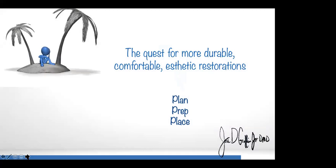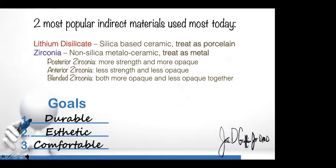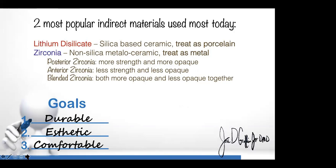The quest for more durable, comfortable, aesthetic restorations: plan, prep, place. The two most popular indirect materials today are lithium disilicate and zirconia. What we're looking for is durable, aesthetic, and comfortable restorations. Lithium disilicate — you're going to treat as porcelain. It's silica-based; you can etch it with hydrofluoric acid and silanate it. Zirconia — you're going to treat it as a metal. Whatever you would do for metal is what you can do for zirconia. There are three main classes of zirconia: regular old posterior zirconia — the opaque stuff that came out about 15 years ago; anterior zirconia — less fracture resistance but less opaque and better aesthetics; and blended zirconias that are opaque in one part and less opaque in the rest.